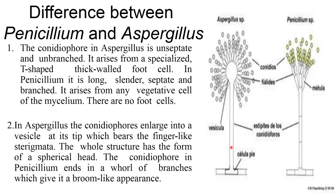In Aspergillus, the conidiophore enlarges into a vesicle at its tip, and it bears finger-like sterigmata. The whole structure has the form of a spherical head. The conidiophore of Penicillium ends in a whorl of branches.